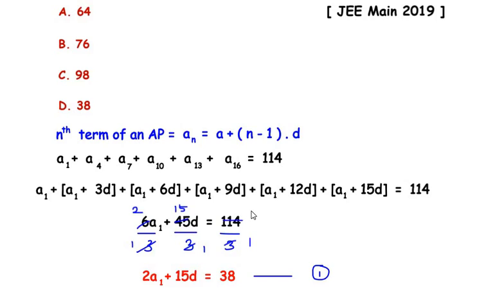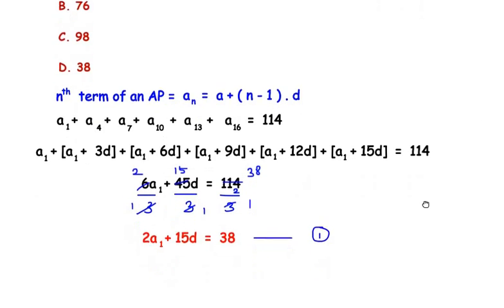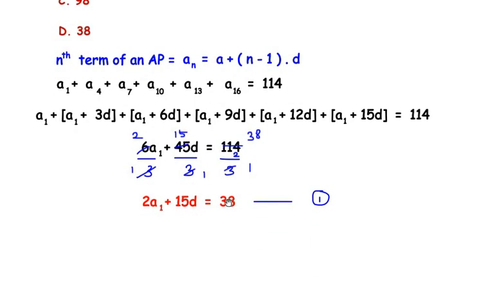equals 38, since 114 divided by 3 is 38. So our expression is reduced to simple terms, that is 2a1 plus 15d equals 38. Let us call this equation as equation 1.